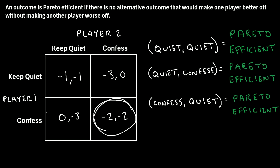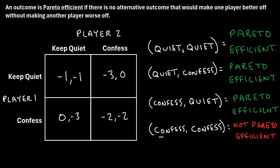Now let's check the last possible outcome: player one confesses and player two confesses. If we move from this outcome to one alternative, player one moves from negative two to negative one — an improvement — and player two also moves from negative two to negative one — also an improvement. Neither player is made worse off. Because it's possible to move to another outcome where neither player is worse off, this is not a Pareto efficient outcome. The outcome where both player one and player two confess is not Pareto efficient.